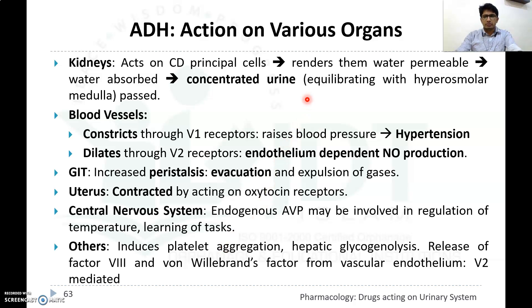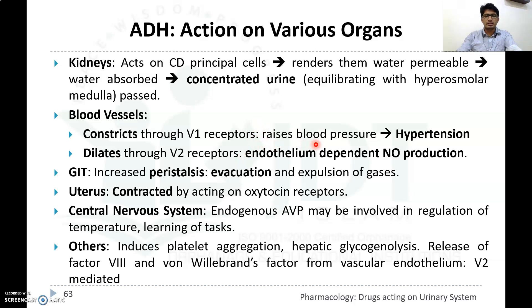ADH or vasopressin produces different actions in different organs. In the kidney, it acts on collecting duct principal cells, rendering them water-permeable, leading to water absorption and concentrated urine, thereby preventing water loss. In blood vessels, ADH constricts via V1 receptors, raising blood pressure and potentially causing hypertension, while V2 receptors cause vasodilation through nitric oxide production.